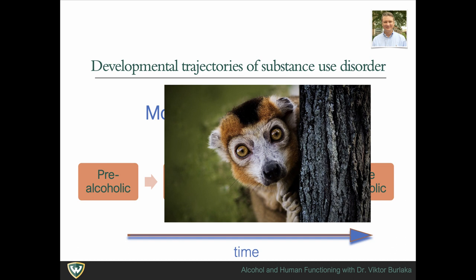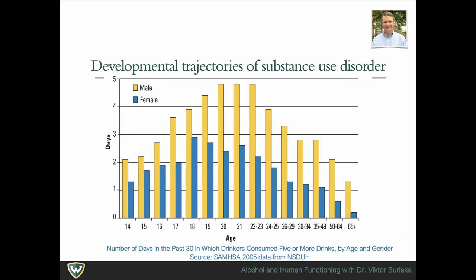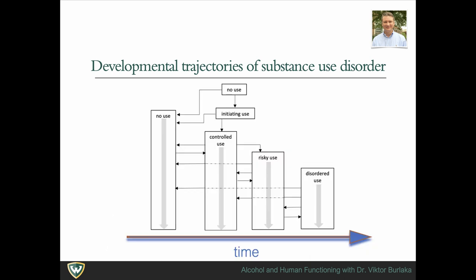More recent studies demonstrated the dynamic, consistently changing nature of addiction behaviors. A typical substance misuse trajectory begins during adolescence or emerging adulthood, then either declines or escalates during early adulthood, possibly but not necessarily meeting criteria for substance use disorder. A person can move back and forth between controlled, risky, and disordered drinking, and no alcohol use at all.